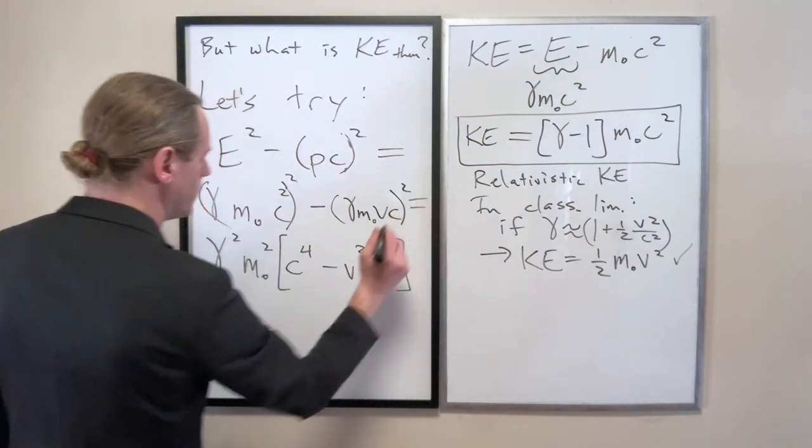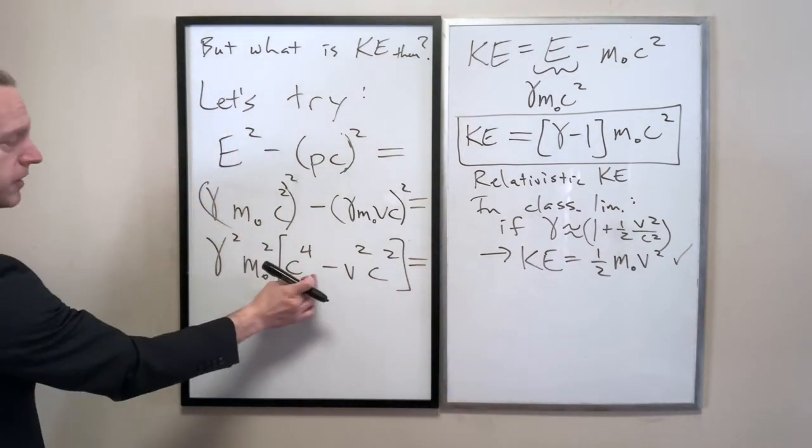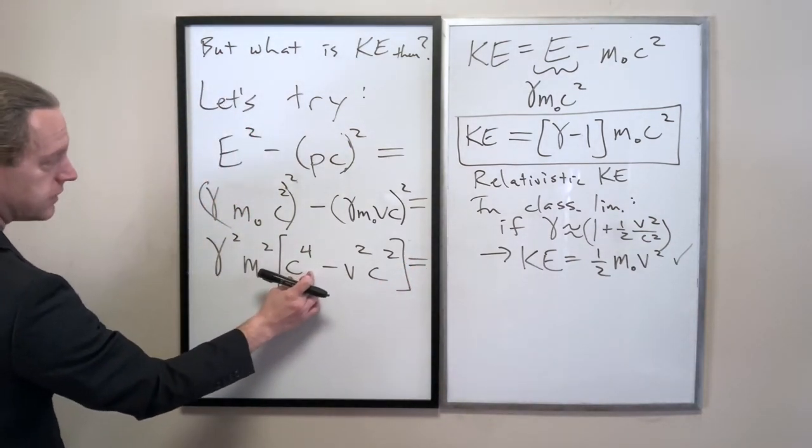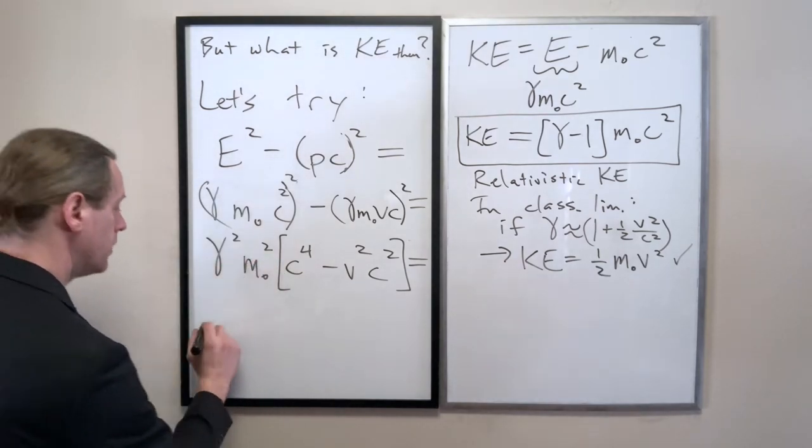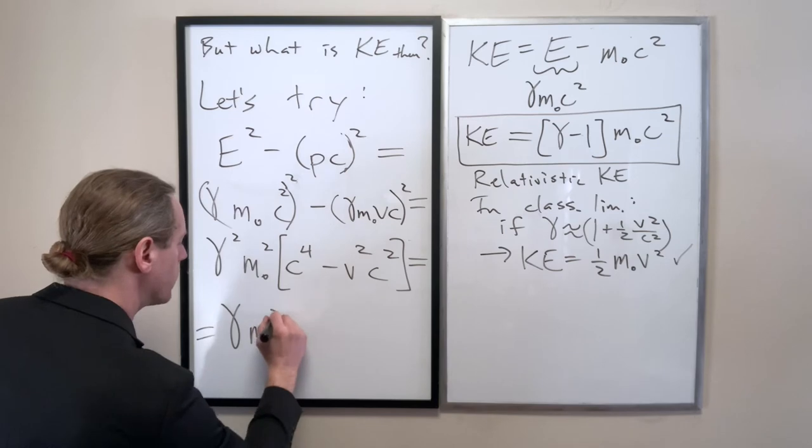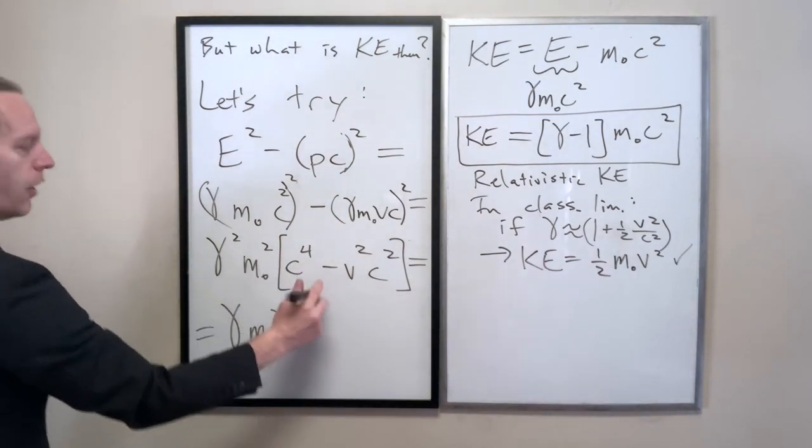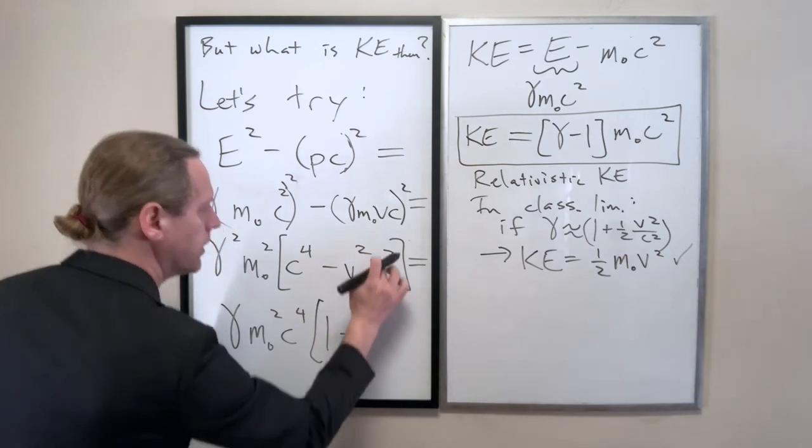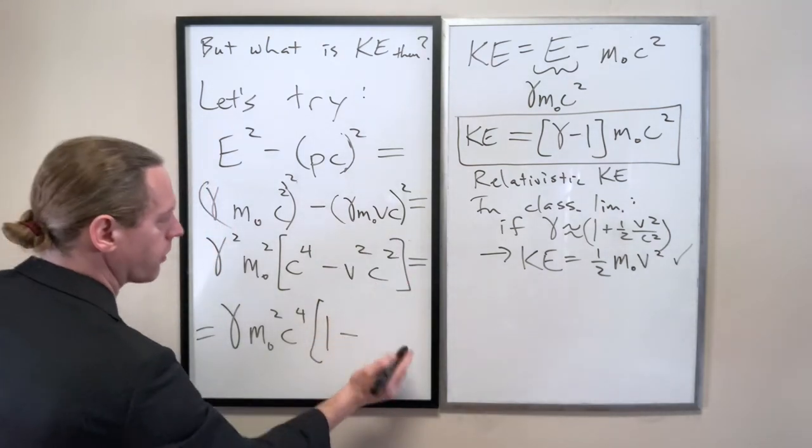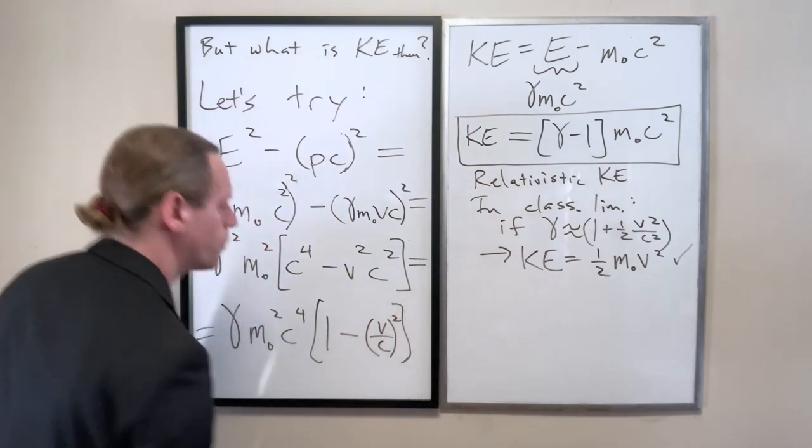That should equal... And this will equal... I'm going to pull out a C to the fourth from everything. So equals gamma M naught squared C to the fourth. And then now that's times one minus... I have to divide this by C to the fourth. And you see why I do that now? V over C squared.